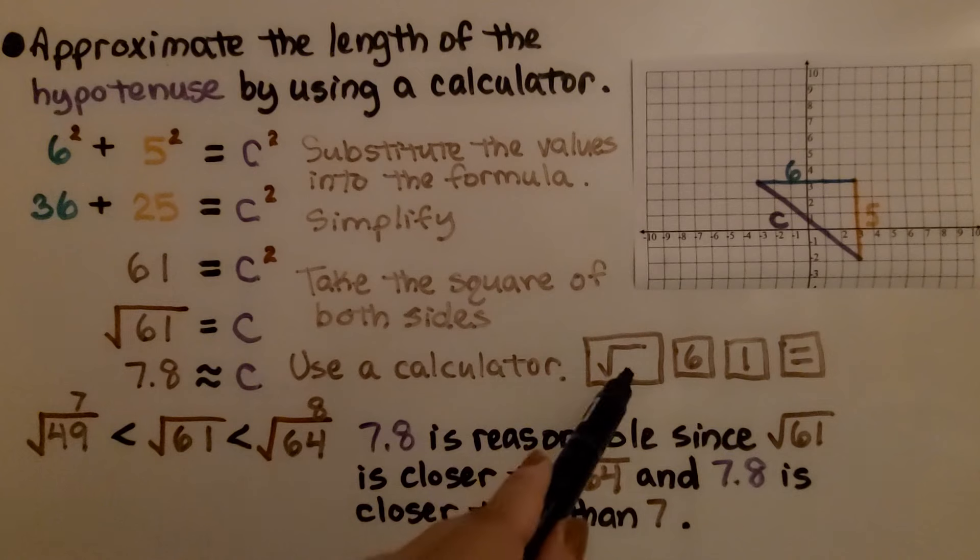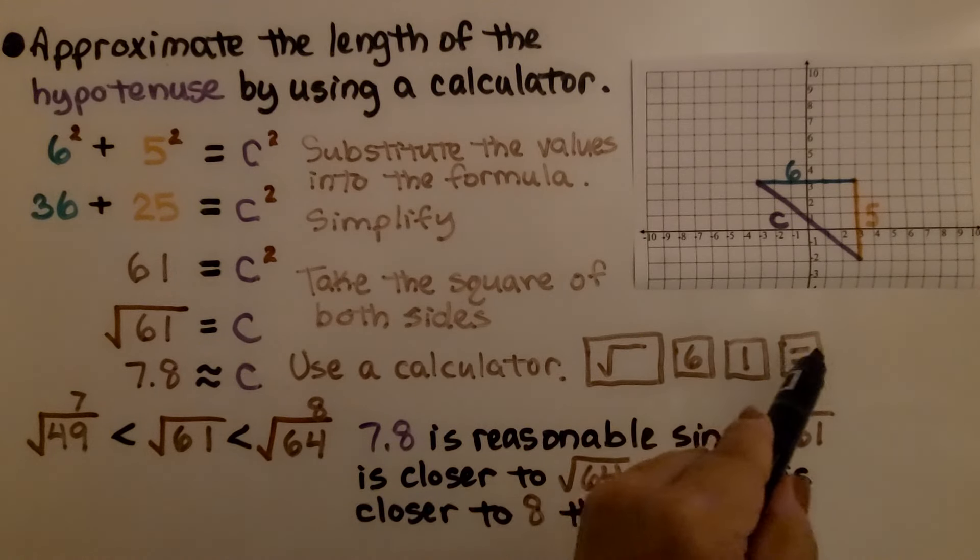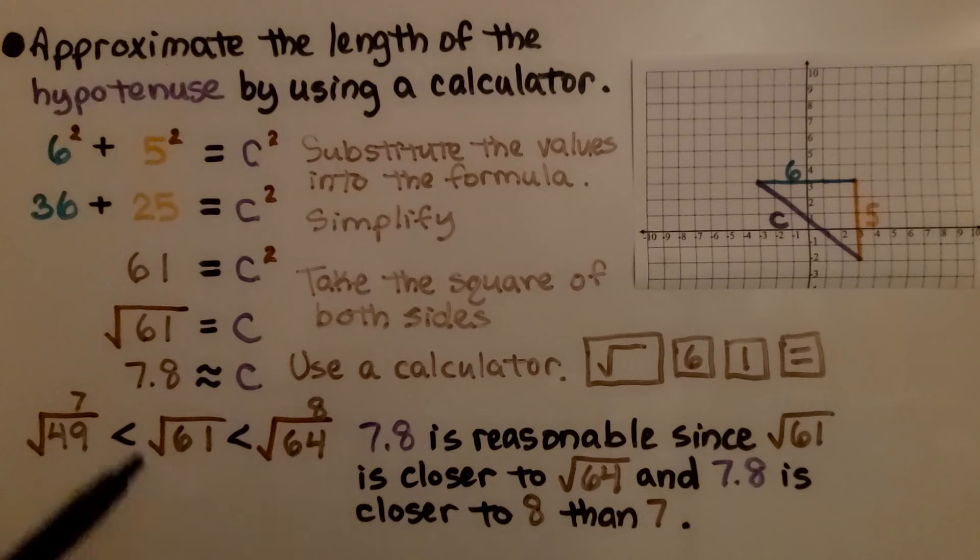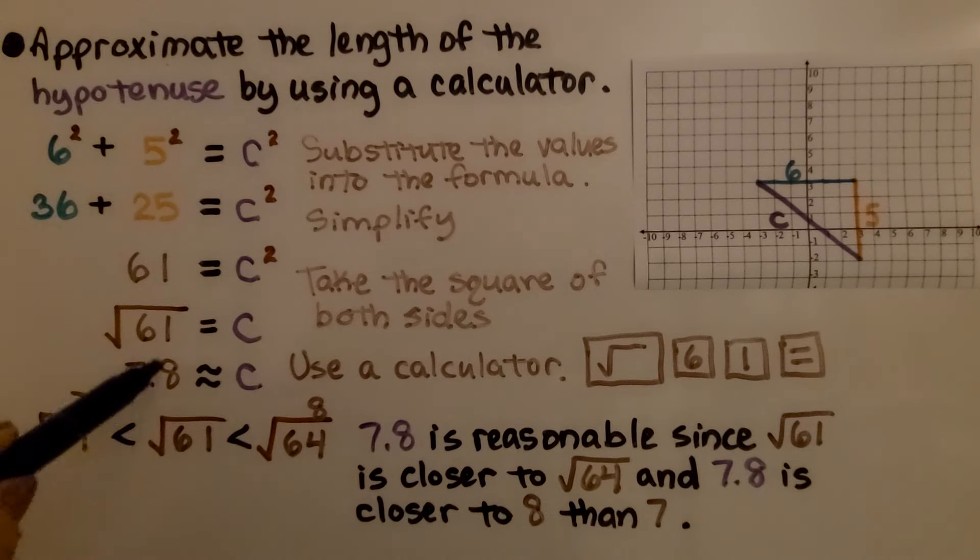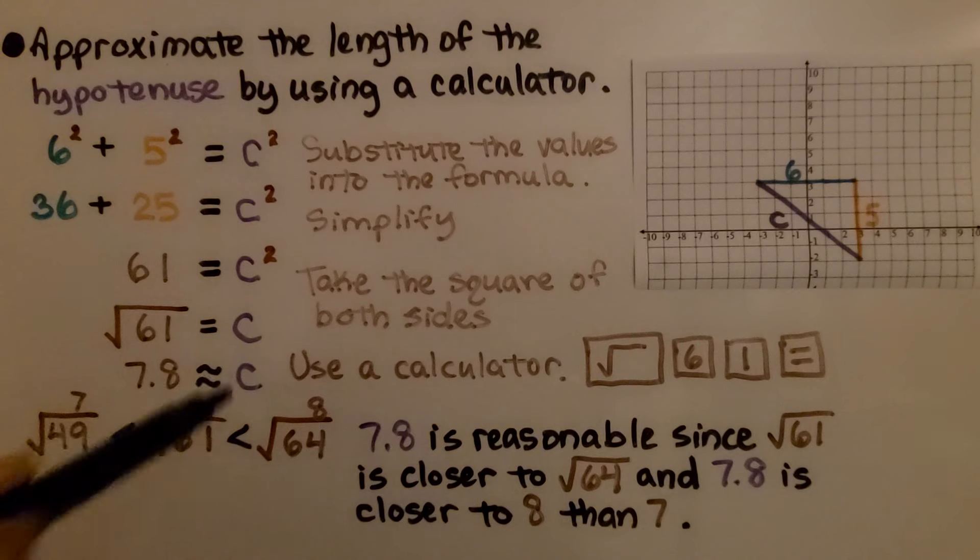On a calculator, we hit the square root key, 6, 1, and the equal sign. And we get a longer decimal number of 7.8 and it continues. But we're looking for an answer to the nearest tenth, so we write 7.8 approximately c.